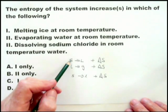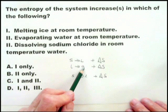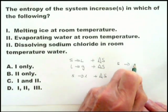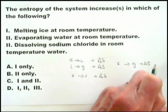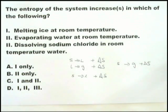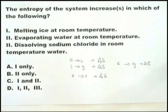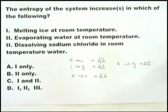Combining the first two — a solid going to a liquid (melting) and a liquid going to a gas (boiling or evaporating) — you get a solid going to a gas, which is also a positive change in entropy. Therefore, melting ice at room temperature is a positive change in entropy because the molecules are moving apart, they have greater freedom, and therefore there is more disorder in the system.